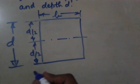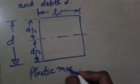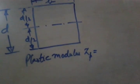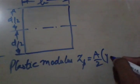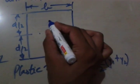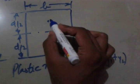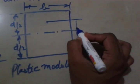So plastic modulus, the formula is Zp is equal to A by 2 times (y1 plus y2), and y1 is the distance of the centroid from the center line.